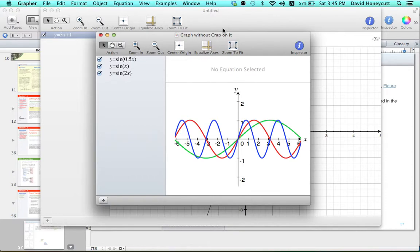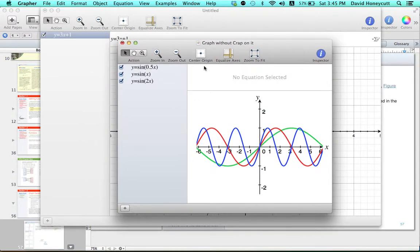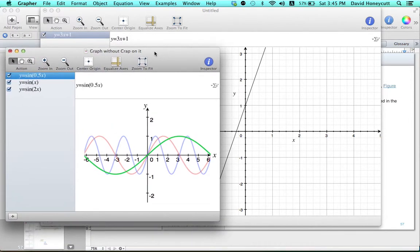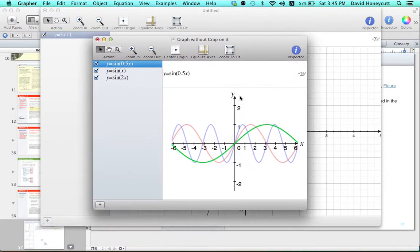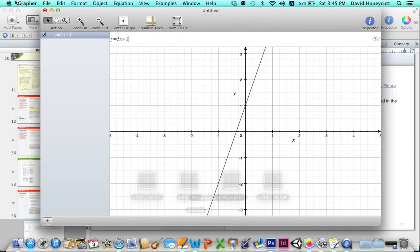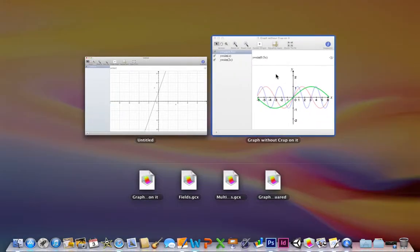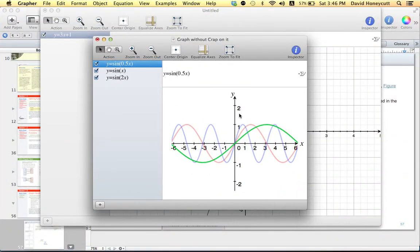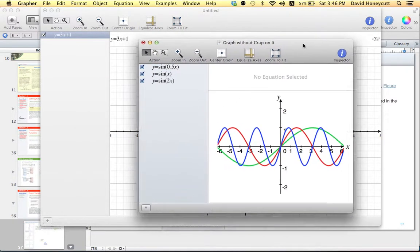The graph I'm going to make today is the graph of sine, sine of x, as well as its compressions when you have sine of half x and sine 2x. You can see it looks really nice on here, and it looks really crappy in the background, so I'm going to show you how to get from here to this nice example of compression and stretching.